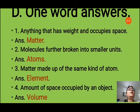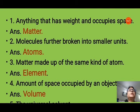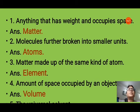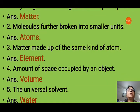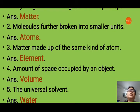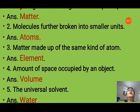Question D: one word answers. First: anything that has weight and occupies space — answer is matter. Second: molecules further broken into smaller units — answer is atoms. Third: matter made up of the same kind of atom — answer is element, because elements are pure substances made up of the same kind of atoms. Fourth: amount of space occupied by an object — answer is volume. Fifth: the universal solvent — answer is water, because water can dissolve more substances than any other liquid.